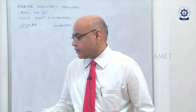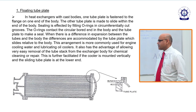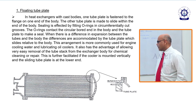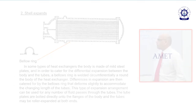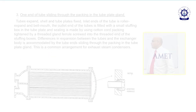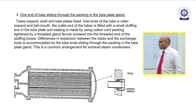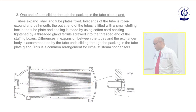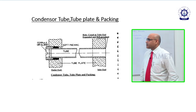In the first arrangement, one side of the tube plate is fixed and the other side is free to float. In the second, both tube plates are fixed but the shell is free to expand. In the third method, one side of the tubes is fixed in the tube plate and the second end the tubes can expand freely in the stuffing box. These are the three methods for handling expansion and contraction of the tubes.